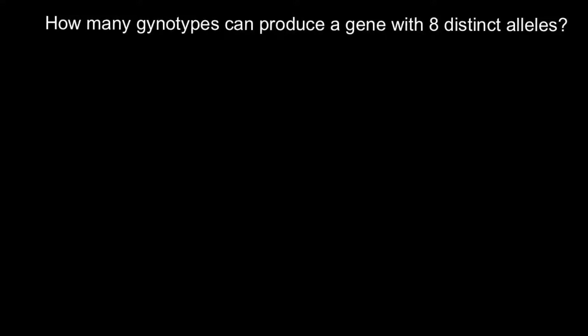We should understand that this question is about alleles in a diploid organism. We humans are diploid, and most organisms on Earth are diploid — except bacteria, which are monoploid, and some plants, which can be polyploid: triploid, tetraploid, and so on.